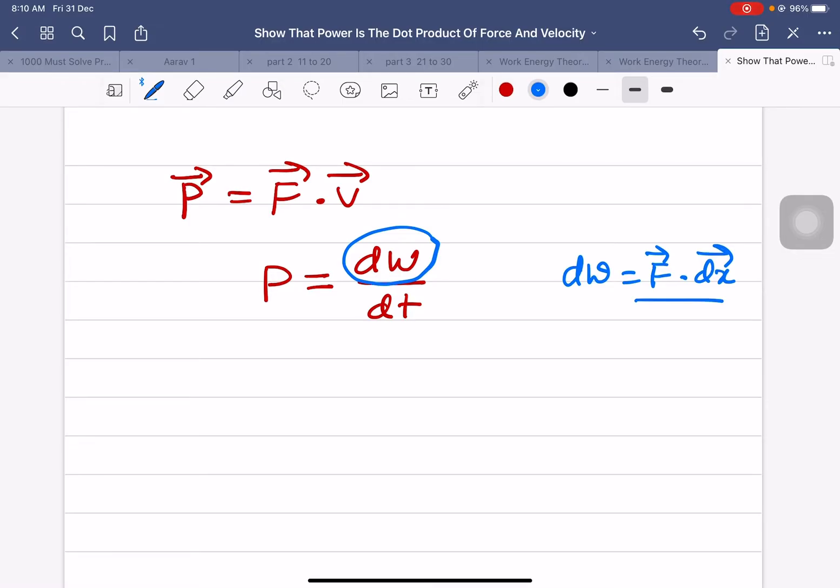F dot dx. So in place of dW, we will write F dot dx, divided by dt.